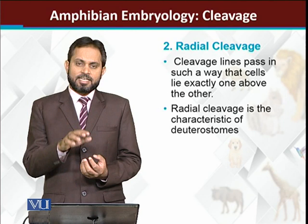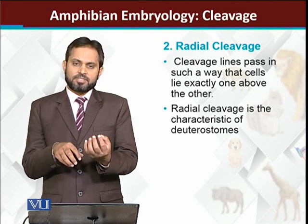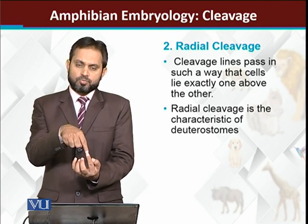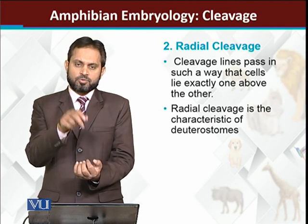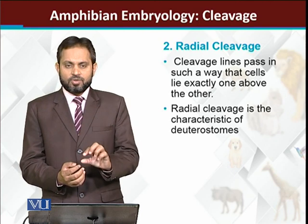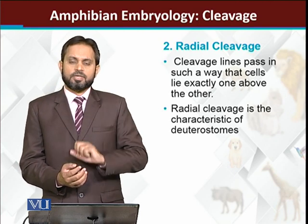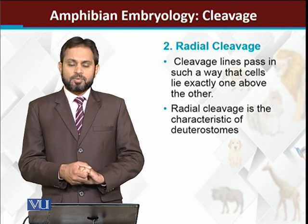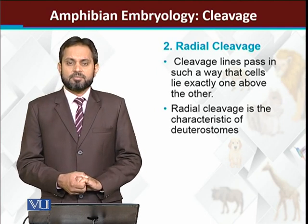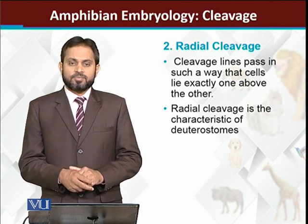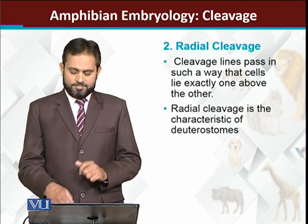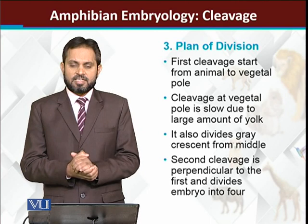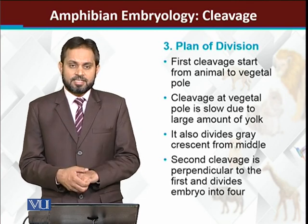In radial cleavage, the key feature is that if there is a lower tier of cells, the upper tier forms exactly on top of them — each cell in the upper tier is directly above the corresponding cell in the lower tier. Both tiers are arranged in the same line. This type of cleavage is called radial cleavage, and it is generally described as indeterminate, meaning you cannot presume in the beginning which cells will form which structure. The holoblastic and radial cleavage pattern has now been established.